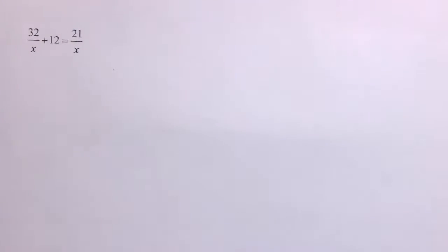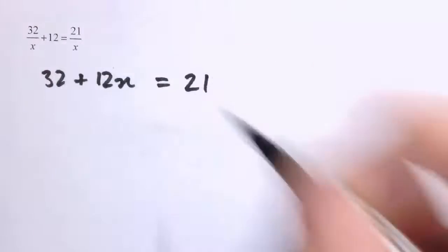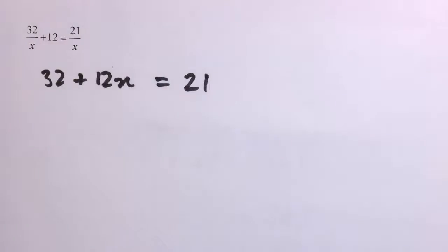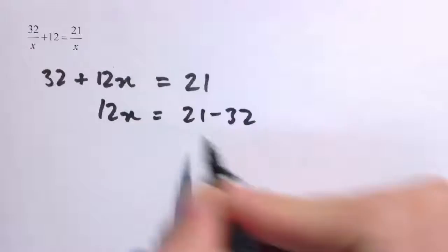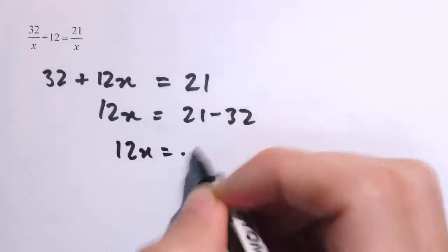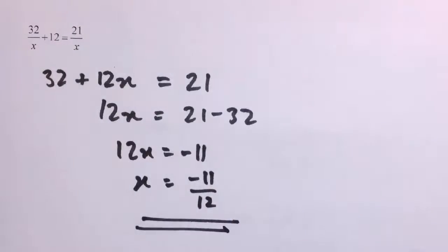Let's look at some progressively trickier examples. This one has x in the denominator in two different fractions. So if we multiply left and right-hand side by x, we get 32 plus 12x equals 21. That clears the x's from all the denominators. So 12x equals 21 minus 32, which is minus 11. Therefore x equals minus 11 over 12. I prefer to leave answers as fractions rather than converting to decimals.